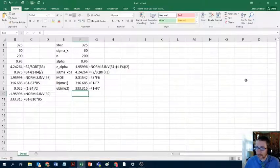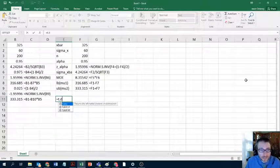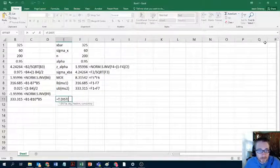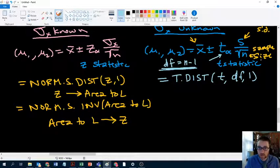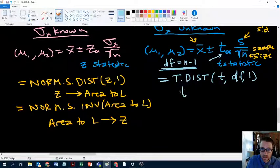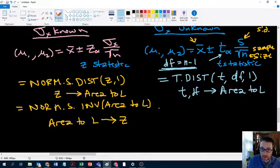Let me double check that. I'm pretty sure that's right, but let's see. Equals t dot dist. Yep, x deg freedom cumulative. So our x is our t there, degrees of freedom, and one. And that'll take our t and our degrees of freedom, and it gives us an area to the left.